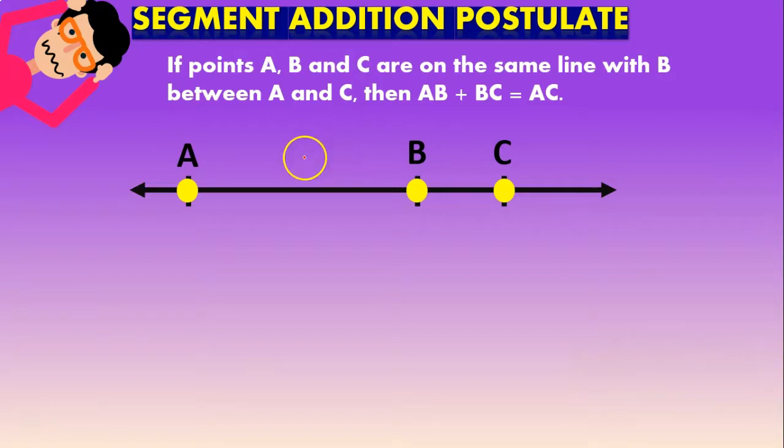In other words guys, what the postulate tells us is that if we have a point B between other two points or endpoints A and C, the distance between A and B added to the distance between B and C is going to give us the total distance between the two endpoints.